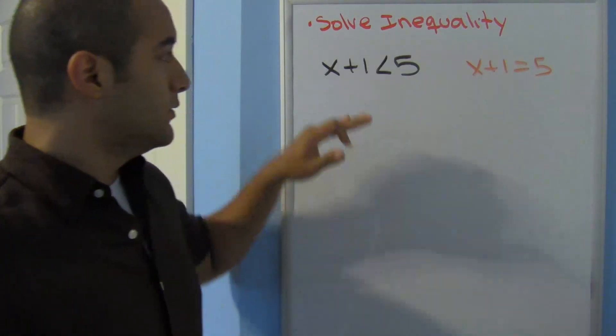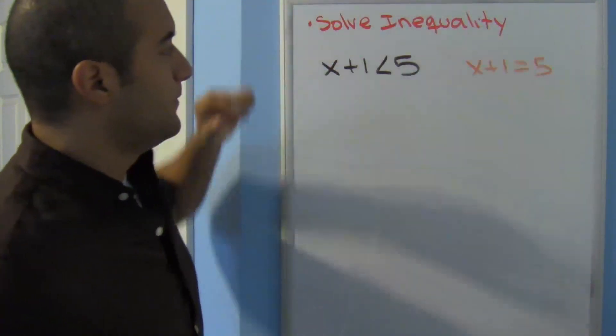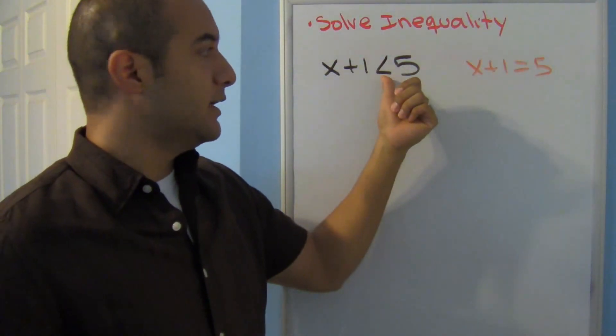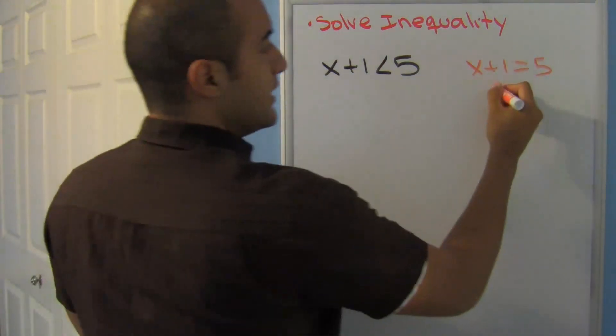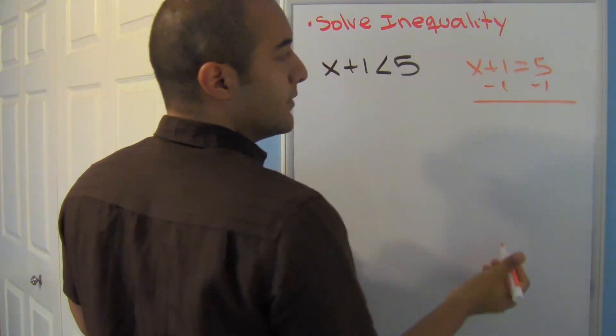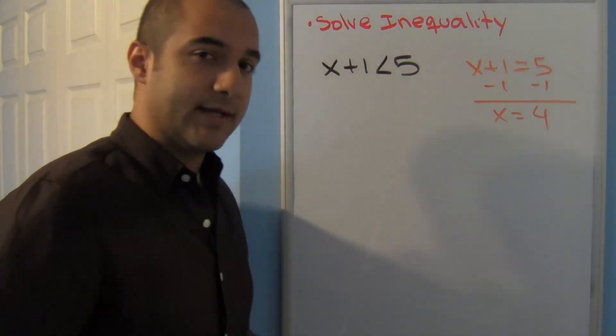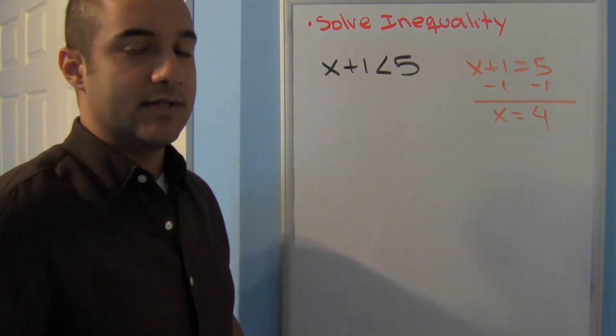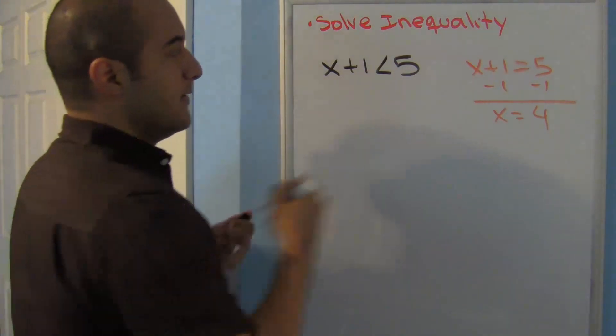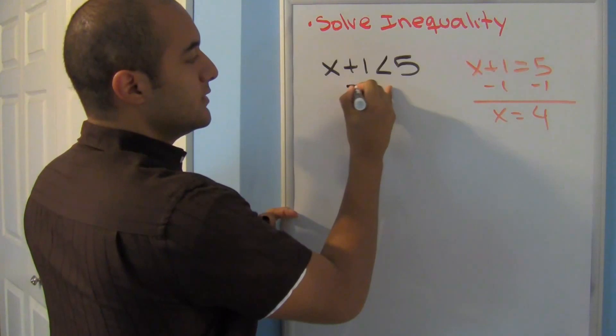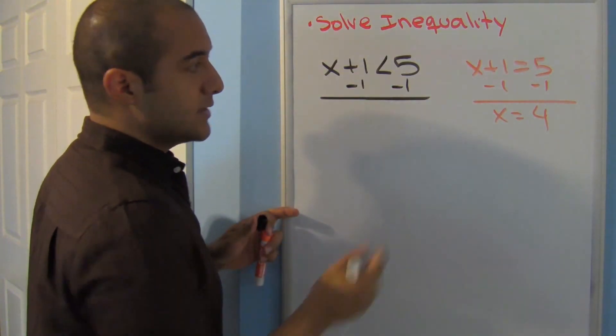Now here I have x + 1 is less than 5. Well, if you think of the inequality symbol, the less than, as an equal sign, you already know what to do. You would just go ahead and subtract 1 from both sides and you have x equals 4. Well, it's almost like that. Sometimes you get stuck, you can think of these as equal signs, even though sometimes special things do happen. Let's look at what we have here. I'm going to go ahead and subtract 1 from both sides just like I would normally do.